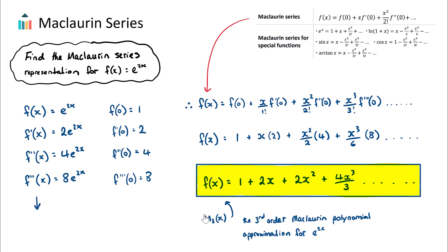Now this can be expressed as this capital M for Maclaurin here, and a little 3. So this is the third order Maclaurin polynomial.